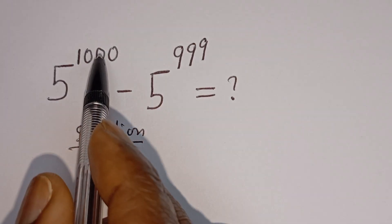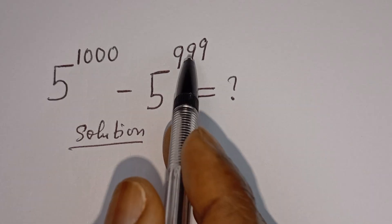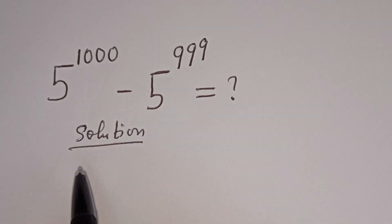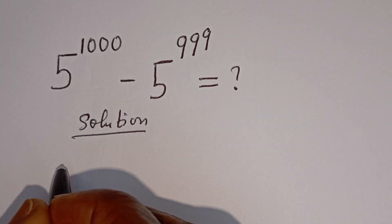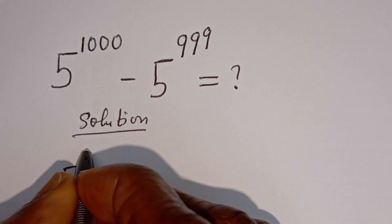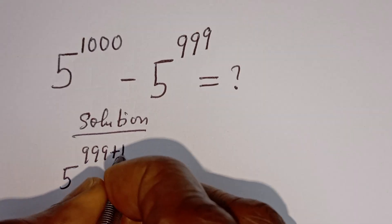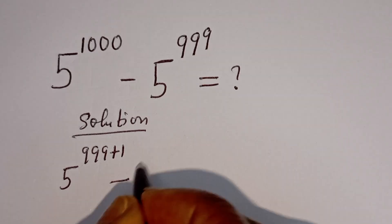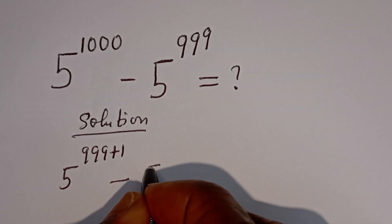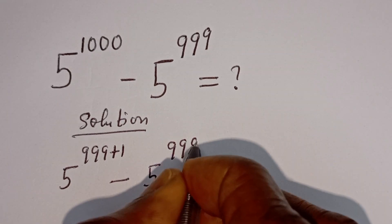Here we have 5 to the power of 1000 and this is 5 to the power of 999. 5 to the power of 1000 can be written as 5 to the power of 999 plus 1, minus 5 to the power of 999.